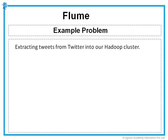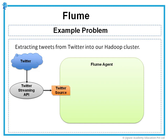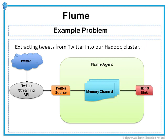For this, our data flow of the flume agent might look something like this. We have users tweeting on Twitter which need to be extracted into HDFS, for which we will use a flume agent. The tweets can be accessed using the Twitter streaming API. Here the source will be configured to access Twitter using the Twitter source class, which will consume the tweets as events and will then be buffered in a memory channel before forwarding them to an HDFS sink. With that information, let us go about configuring our agent.